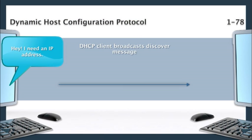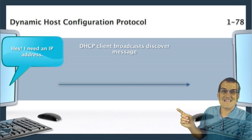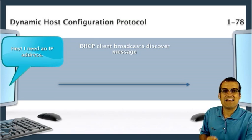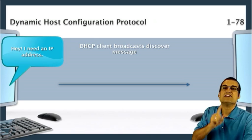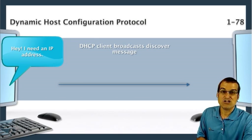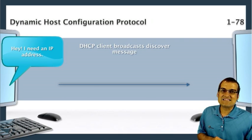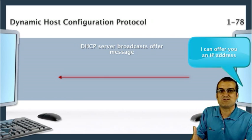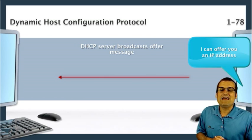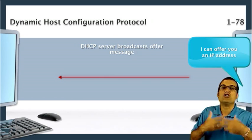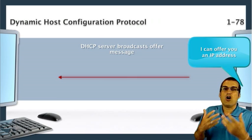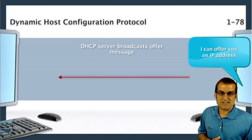In step one, the client sends out a broadcast discover message to try and obtain its IP address information. In the second step of the process, the DHCP server responds with an offer — the R-O in DORA — which is an offer for some IP address information.